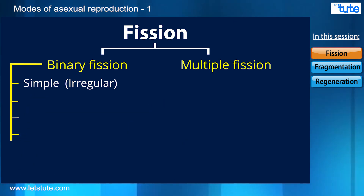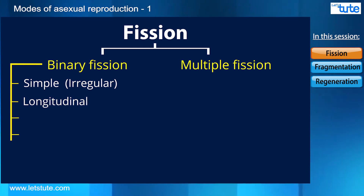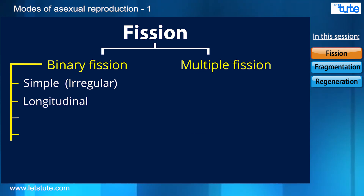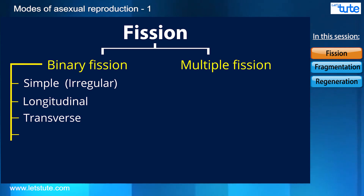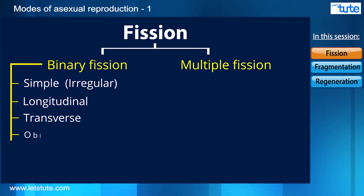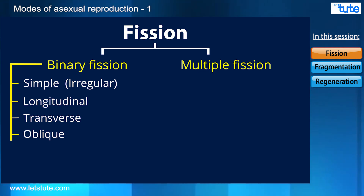The second method is longitudinal binary fission. Here organisms have better body organization, so fission takes place along the longitudinal axis. The example is Euglena. The third method is transverse binary fission, where fission takes place along the transverse axis — the example being Paramecia. The last is oblique binary fission, where fission takes place along the oblique axis, with the example being dinoflagellates.